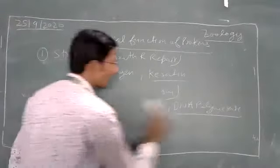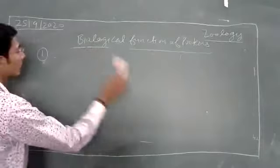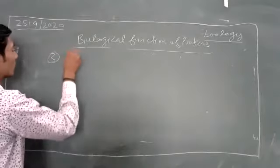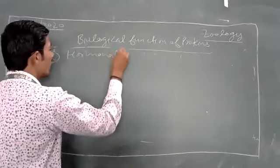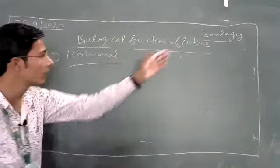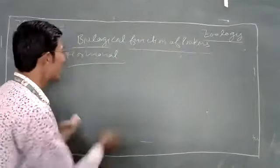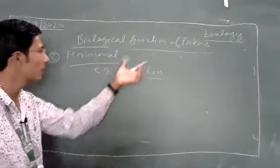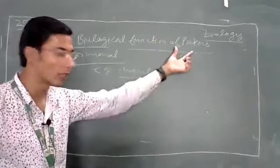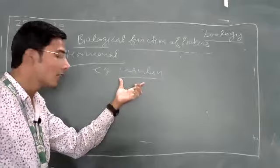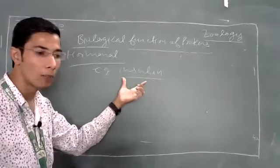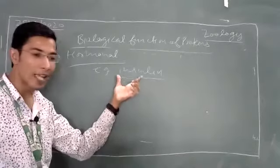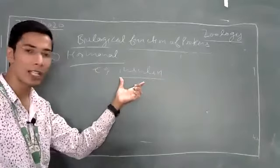The third function is hormonal function. Some hormones are proteins. For example, insulin is a protein hormone. Insulin is a hypoglycemic hormone — it reduces excess glucose present in your blood.